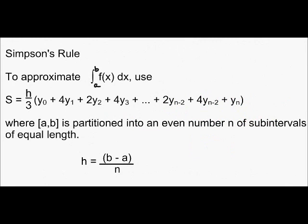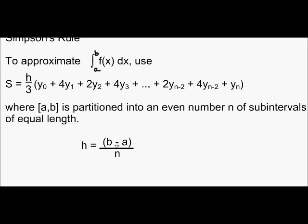Next we have Simpson's rule. To approximate this integral, we're going to use Simpson's rule, which is written here, where [A,B] is partitioned into an even number of subintervals of equal length. And you can see H is defined again as B minus A divided by N. And this will be our last problem that we're doing.